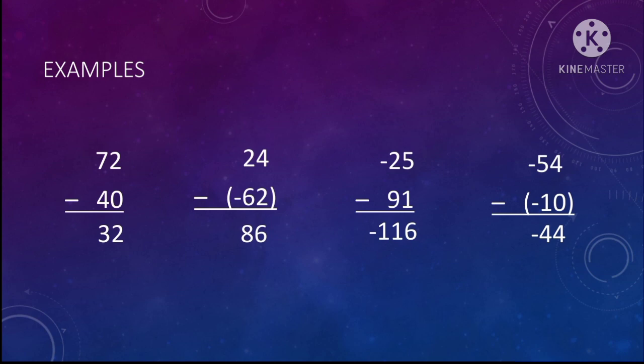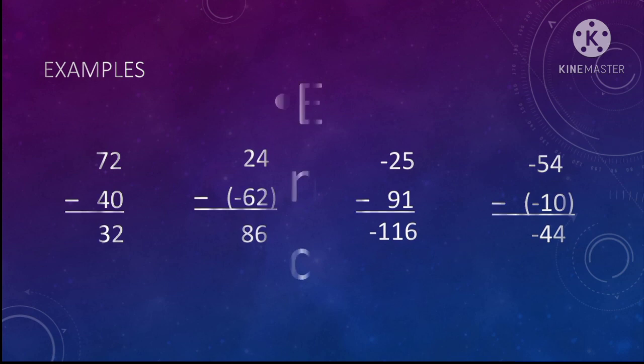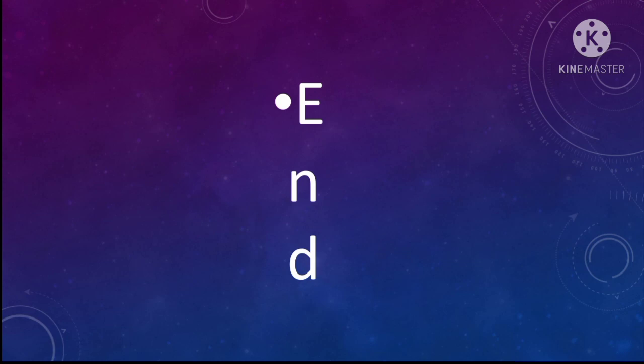Next is negative 54 minus negative 10. Negative multiplied by negative is equal to positive, so it is similar to negative 54 plus 10. Since negative 54 is greater in absolute value than 10, that would be equal to negative 44. And that would be all for this video.